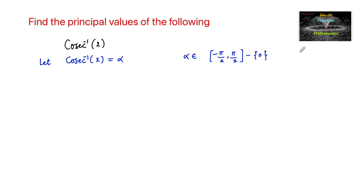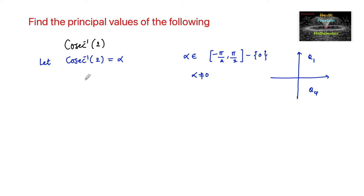So alpha can be considered either in the first quadrant or in the fourth quadrant, excluding 0. Since alpha cannot equal 0, we write cosecant alpha is equal to 2. We know that cosecant of pi by 6, that is cosecant 30°, is equal to 2.